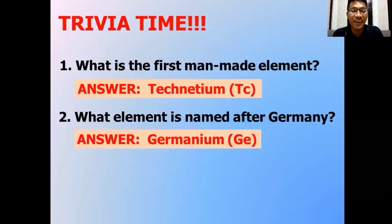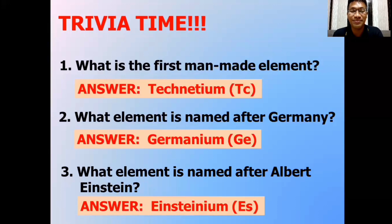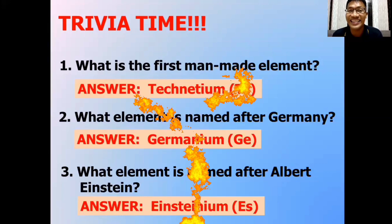Trivia number three. What element is named after Albert Einstein? Of course, it should sound like Einstein. And that is Einsteinium. Some elements in the periodic table are named after a person. It's either the discoverer of that element, or sometimes, it is a tribute for the work or contribution done by a certain scientist in the field of science.